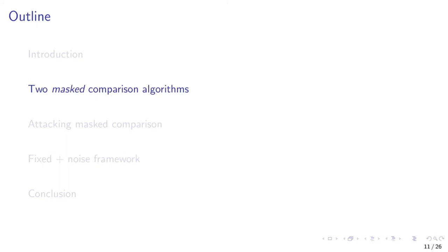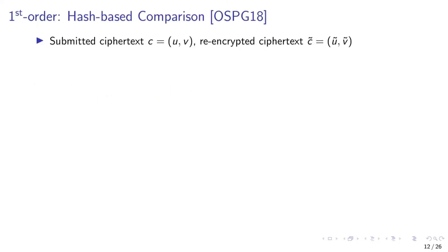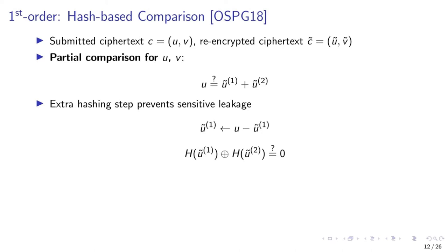Let's move on to the two masked comparison algorithms. The first one is only usable for first-order masking and is based on hashes. We obtain two ciphertexts: the re-encrypted and the submitted ciphertext. The algorithm performs a separate comparison for each ciphertext part U and V. Therefore, we have two shares U1 and U2 and compare if they are equal to the submitted ciphertext. To prevent sensitive leakage, the randomized share U1 is subtracted from the public polynomial. In case both polynomials are the same, the share U1 is then equal to share U2, and hashing them both and comparing them would result in zero. Otherwise, some value other than zero would appear.